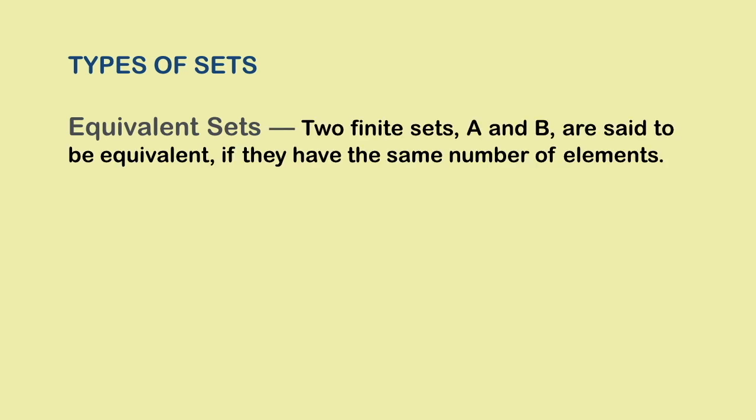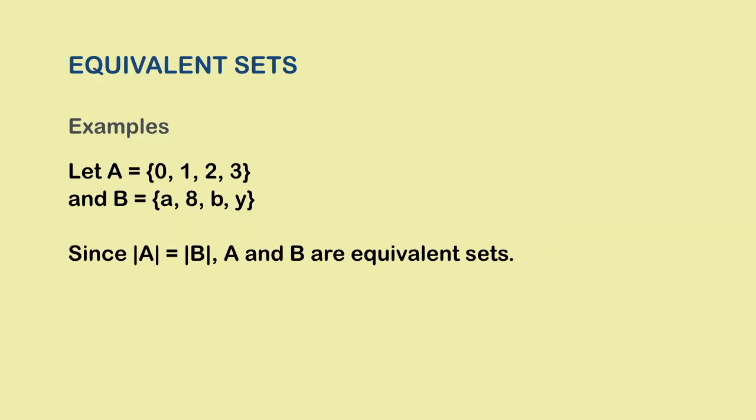Alright, now lets go back to our original discussion and look at equivalent sets. Two finite sets are said to be equivalent if they have the same number of elements. In other words, two sets are said to be equivalent if their cardinality or cardinal numbers are the same. Please note that in case of equivalent sets, the elements need not be the same. What we are concerned with is the number of elements. In our example, both sets A and B have 4 elements each and so they are equivalent.